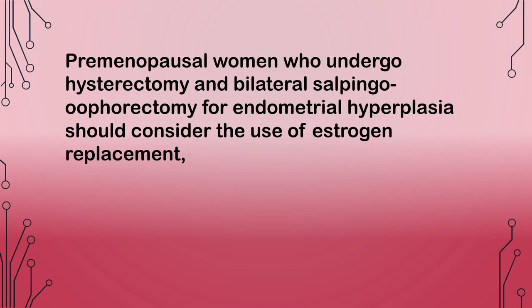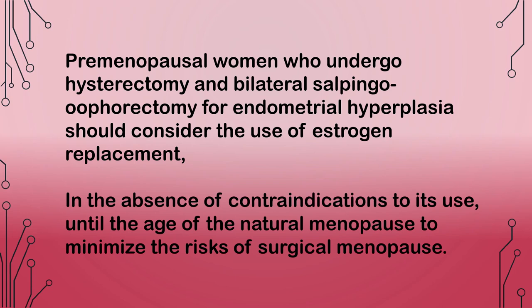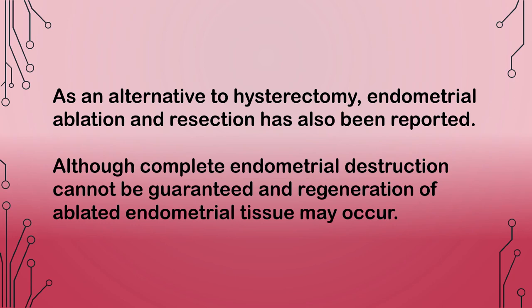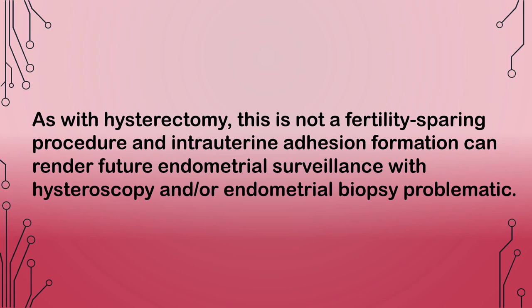Premenopausal women who undergo hysterectomy and bilateral salpingo-oophorectomy for endometrial hyperplasia should consider the use of estrogen replacement in the absence of contraindication until the age of natural menopause to minimize the risk of surgical menopause. As an alternative to hysterectomy, endometrial ablation and resection has also been reported, although complete endometrial destruction cannot be guaranteed and regeneration of ablated endometrial tissue may occur. This is not a fertility-sparing procedure and intrauterine adhesion formation can render future endometrial surveillance problematic.